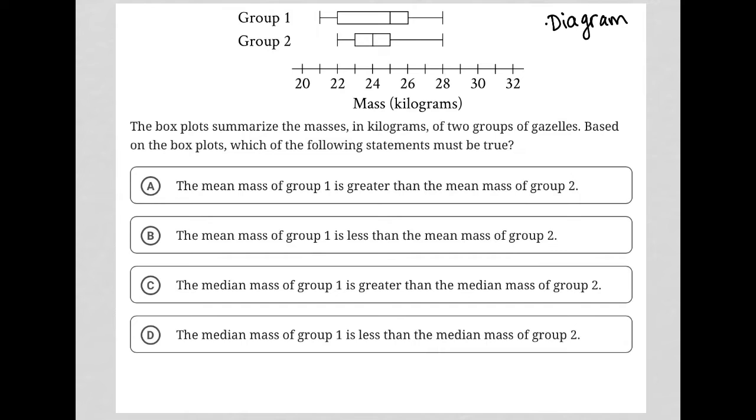We have a box and whisker plot with two groups, group one and group two. Remember that this line to the left always represents the minimum value, this is the maximum value, and this middle line here is the median. Same thing here.